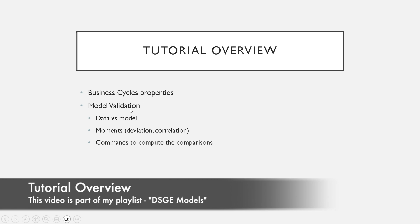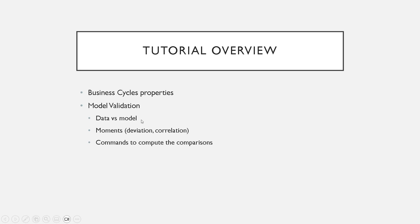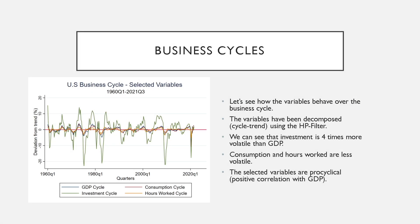In this tutorial we're going to talk about business cycle properties and go through model validation. We're going to discuss what we observe in the real data versus what we get in the model. For this purpose, we'll look at different statistical moments — standard deviation, correlation, etc. — and I'll show you the commands to compute these comparisons. We need to understand business cycles and produce a graph like this one.